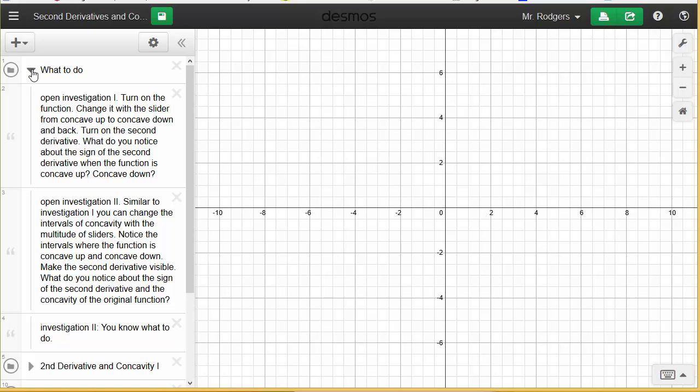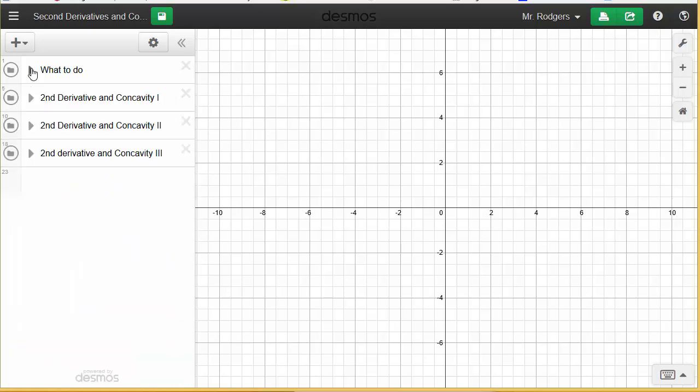All three investigations, you're doing basically the same thing. You're looking at the intervals over which a function is concave up and concave down, and then you're looking at the sign of the second derivative for those intervals of concavity.